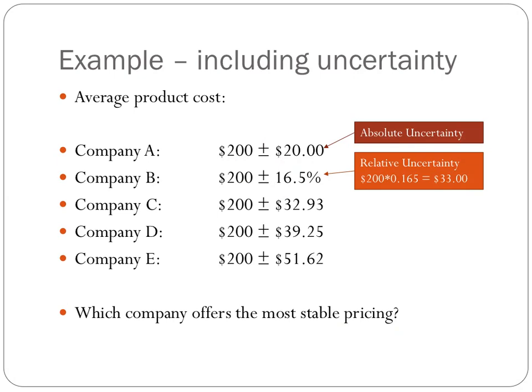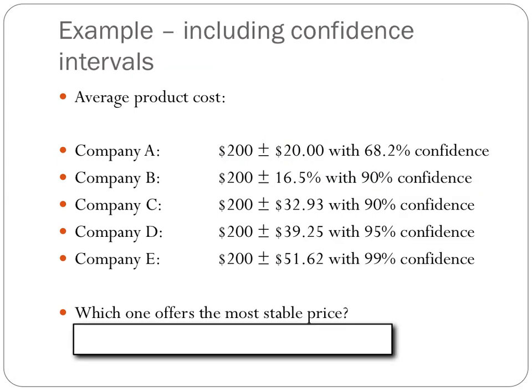Based on this new uncertainty information, we may be inclined to say that company A provides the most stable pricing because the variability is only plus or minus $20, whereas company E has a variability of about $50. Unfortunately, we still do not have enough information, because the uncertainty alone does not tell the whole story. In addition to these uncertainty values, we also need to know the likelihood with which that uncertainty occurs.